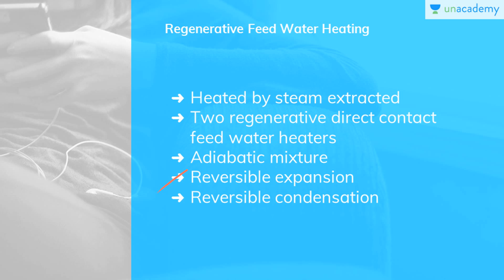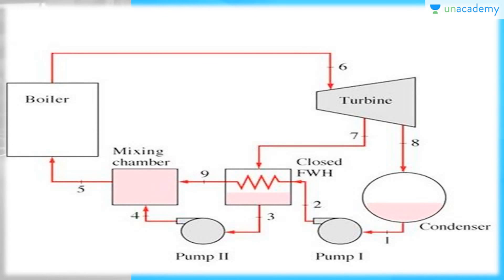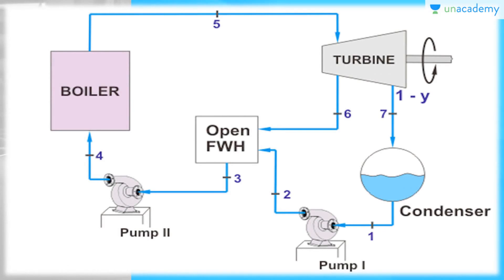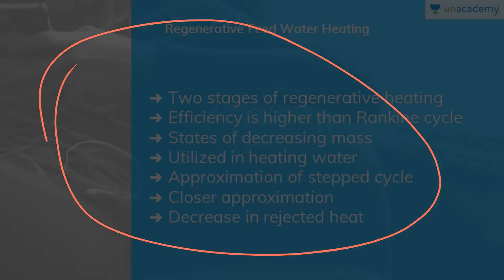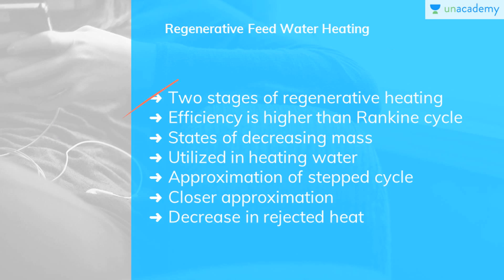The heat and work transfer quantities of the cycle are as follows. You can see the regenerative cycle with two direct-contact feed water heaters — the flow diagram. It consists of two stages of regenerative heating. The efficiency is higher than that of the Rankine cycle. It contains states of decreasing mass and utilizes the heating water. A greater number of stages would give a closer approximation of the step cycle. There is also a loss in work output shown by the hatched area. It also reduces the operating cost due to higher cycle efficiency and increases the boiler size and the capital cost.